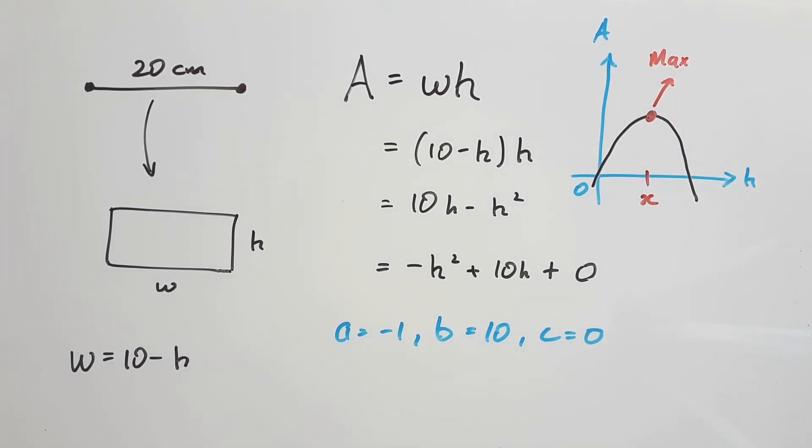To find this x, we can use the axis of symmetry formula, negative b over 2a. You can also use the factor form to find x, so perhaps you guys can try it out that way and let me know what you find. But using this method, all we do is substitute 10 and negative 1 in, to see it evaluate to 5cm.